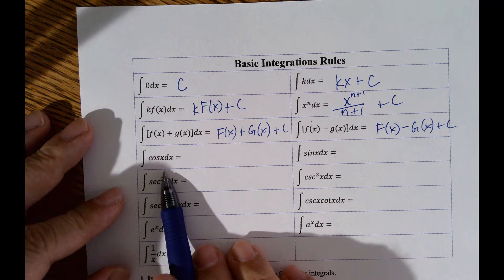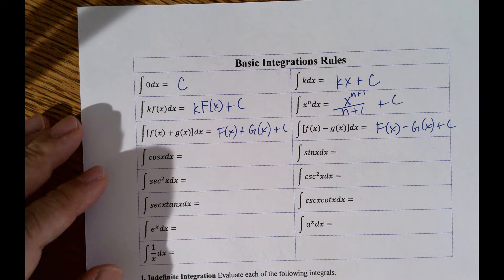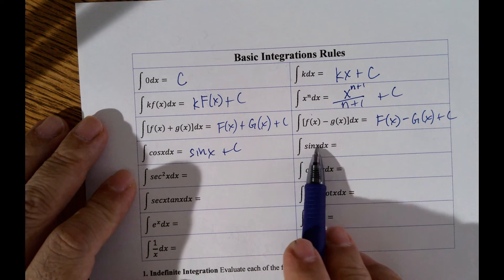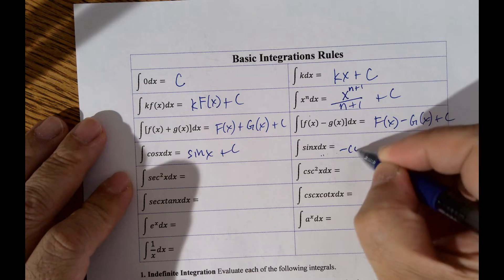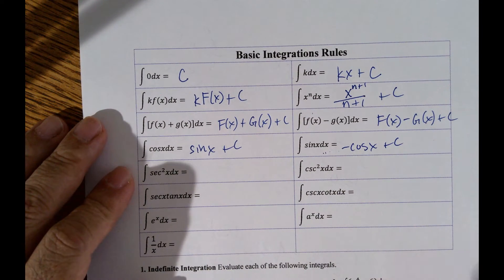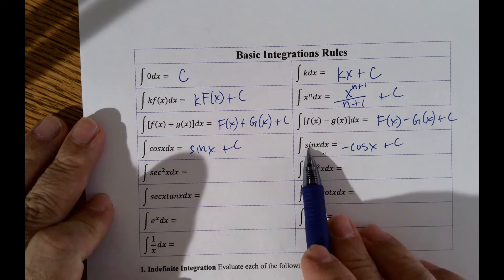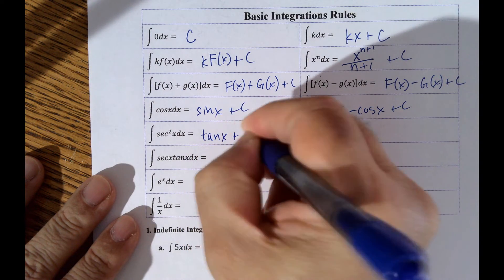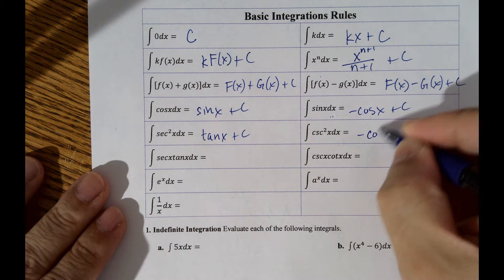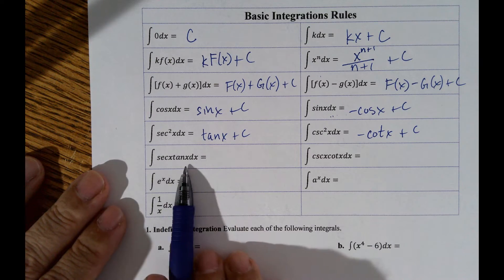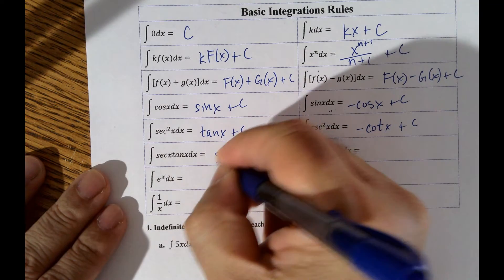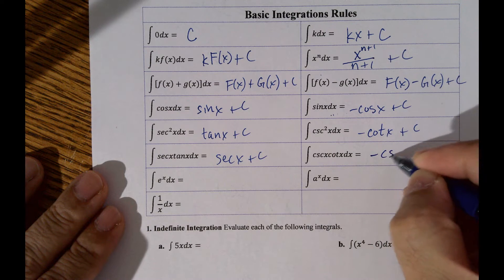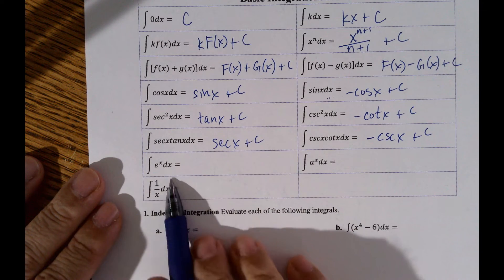Remember, you're doing this backwards. The integral of cosine is sine. The integral of sine is negative cosine x plus C. The integral of secant squared is tangent x. The integral of cosecant squared is negative cotangent x. The integral of secant x times tangent x is secant x. The integral of cosecant x times cotangent x is negative cosecant x. And the integral of e to the x is e to the x.